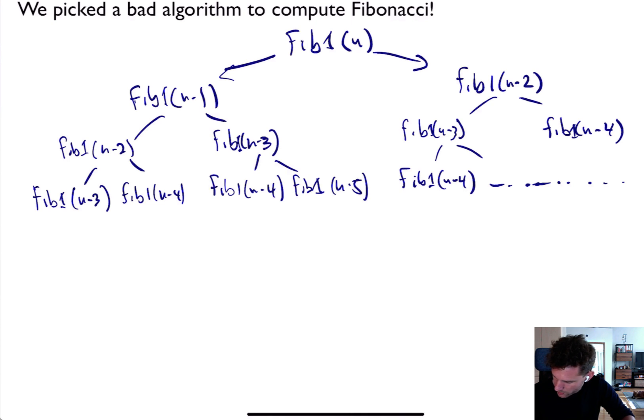So I was repeating the call to Fib1(n-4) multiple times. I computed that multiple times. I didn't need to do that. I can record that computation and save it for later when I need to access it again. So this recursion is blowing up in ways that it doesn't need to. We can be a little bit smarter about how we compute this thing.